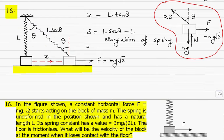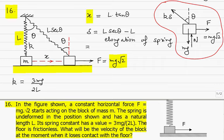Problem 16. In the figure shown, a constant horizontal force F equal to mg root 2 starts acting on the block of mass M. The spring is undeformed in the position shown and has a natural length L. Its spring constant K equals 3mg by 2L. The floor is frictionless. What will be the velocity of the block at the moment when it loses contact with the floor? Let X be the displacement of the block until it loses contact, so X equals L tan theta, where theta is the angle. The natural length is L, so the new length is L secant theta, and the elongation of the spring is L secant theta minus L.